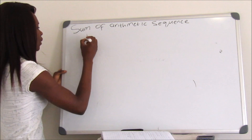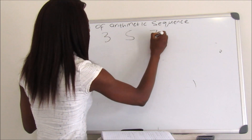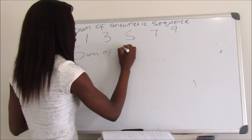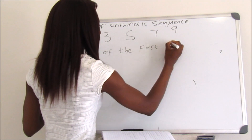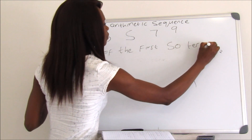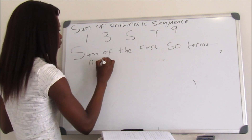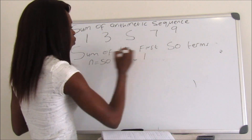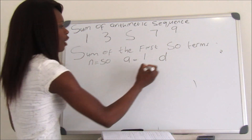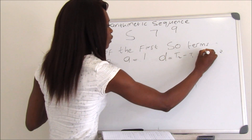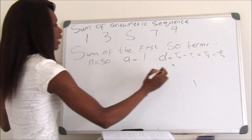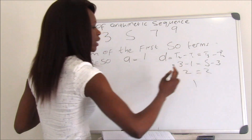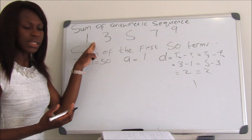For example, we are given the sequence 1, 3, 5, 7, 9. The question says we must find the sum of the first 50 terms. From the question, n = 50 and a = 1. To find d, we use d = t2 − t1 = t3 − t2: that is 3 − 1 = 5 − 3 = 2 from both sides, confirming it is an arithmetic sequence.